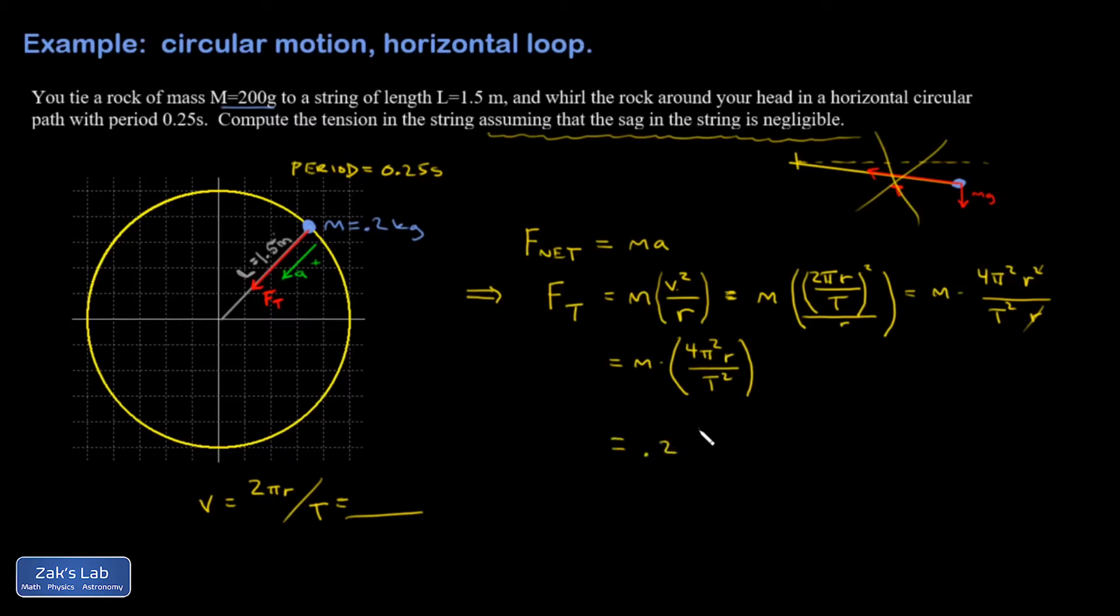All right, so I'm ready to go ahead and plug in. So I have 0.2 times the quantity 4π² r, which is 1.5 over t², 0.25 squared. And I'll smash those numbers real quick. And I get a tension in the string of 189.5, so let's call it, it's a little bit less than a half, so I'll call it 189.